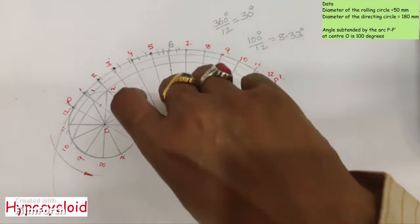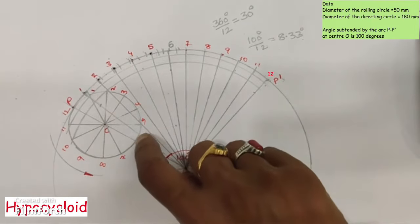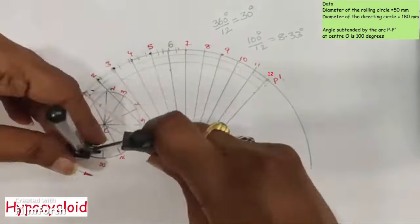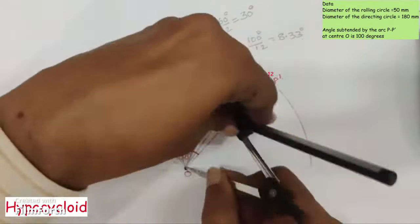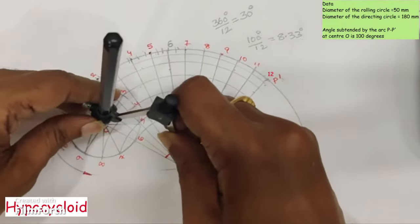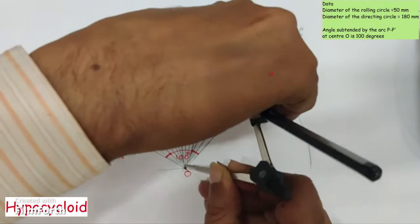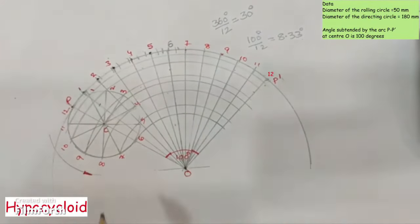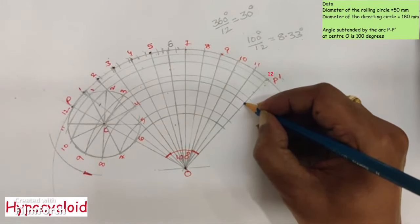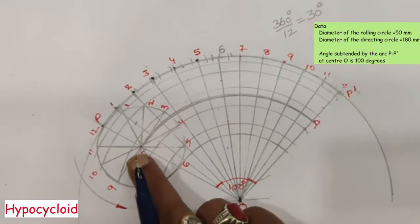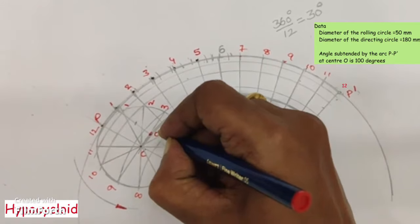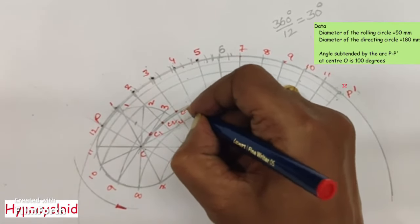With OC as radius and O as center, draw the locus-of-center arc. This arc intersects the OP dashed line at point D. Number the division points on the locus-of-center arc CD as C1, C2, C3, and so on.